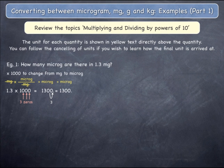The units of milligrams cancel, leaving only micrograms, which becomes a final unit. 1.3 milligrams equals 1,300 micrograms.